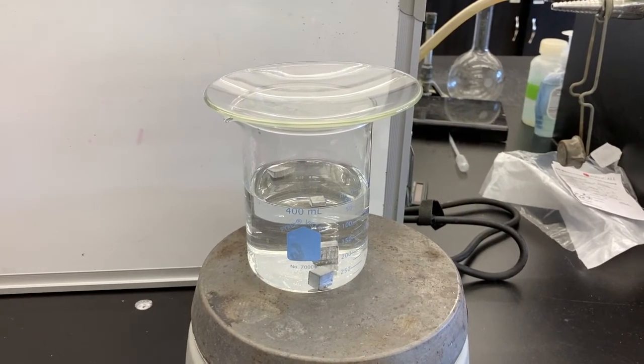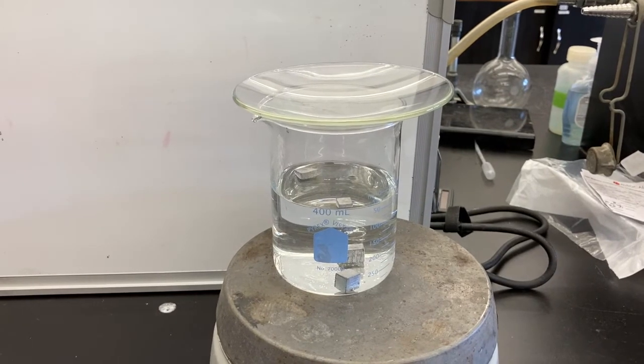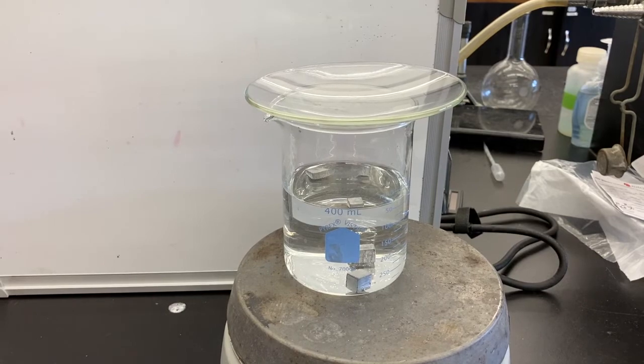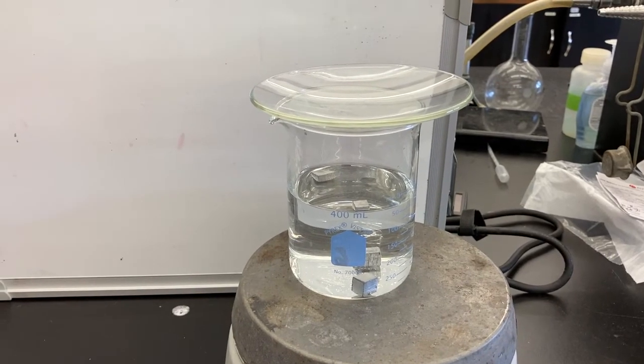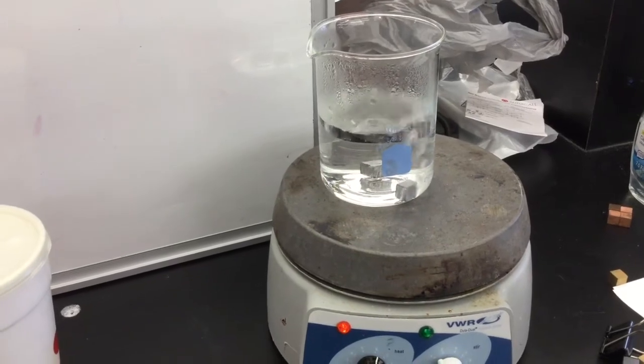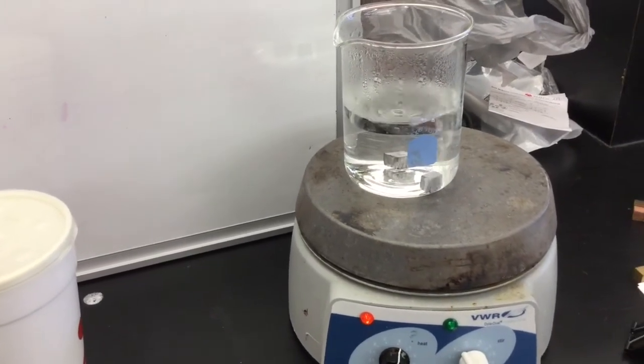It can be helpful to add a watch glass to the top of a beaker to help the heat stay within the beaker and to get the boiling process to occur more rapidly. It may take 10 minutes or so for the water to begin boiling and then you need to let it boil for another 10 minutes.